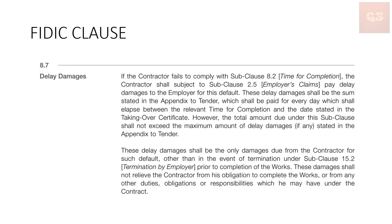As per FIDIC, the delay damages clause is 8.7. It mentions that if the contractor fails to comply with subclause 8.2 (time for completion), the contractor shall, subject to subclause 2.5 (employer's claim), pay delay damages to the employer for this default. These delay damages shall be the sum stated in the appendix to tender, paid for every day which elapses between the relevant time for completion and the date stated in the taking-over certificate. The total amount due shall not exceed the maximum amount of delay damages stated in the appendix to tender. These damages shall be the only damages due from the contractor for such default, other than in the event of termination under subclause 15.2. These damages shall not relieve the contractor from his obligations to complete the works or from any other duties, obligations, or responsibilities under the contract.